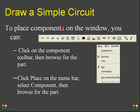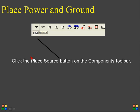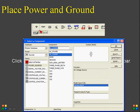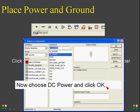To place components on the window, go to the component toolbar and click on it, then browse for the part. Click Place on the menu bar, select the component, and browse for the components. Here I am selecting a component — click the Place Source button on the component bar. After placing it, choose whether it belongs to AC power, DC power, ground, or other categories. Choose DC power and click OK.